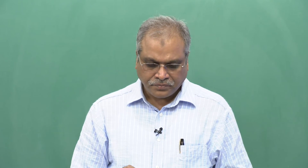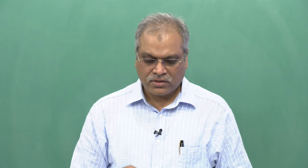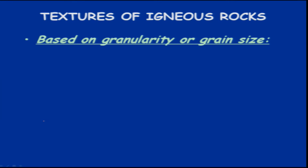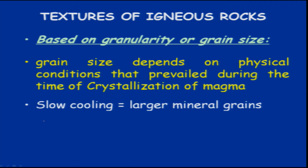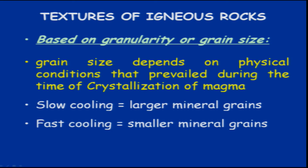Regarding the texture of igneous rocks — based on the granularity or grain size — grain size depends on the physical conditions that prevail during crystallization of magma. Slow cooling gives rise to larger mineral grains and fast cooling results in smaller mineral grains.